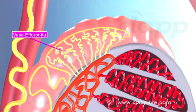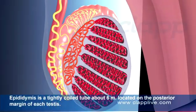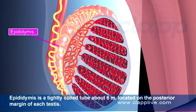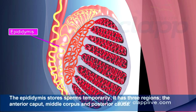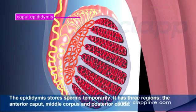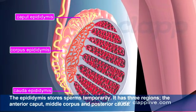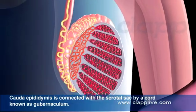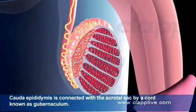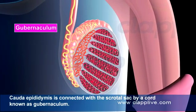The vasa efferentia form the initial part of the epididymis, and at some locations they bear cilia to help in sperm transport. The epididymis is a tightly coiled tube, about 6 meters long, located on the posterior margin of each testis. It stores sperm temporarily and has three regions: the anterior caput, the middle corpus, and the posterior cauda. The cauda epididymis is connected with the scrotal sac by a cord known as the gubernaculum.